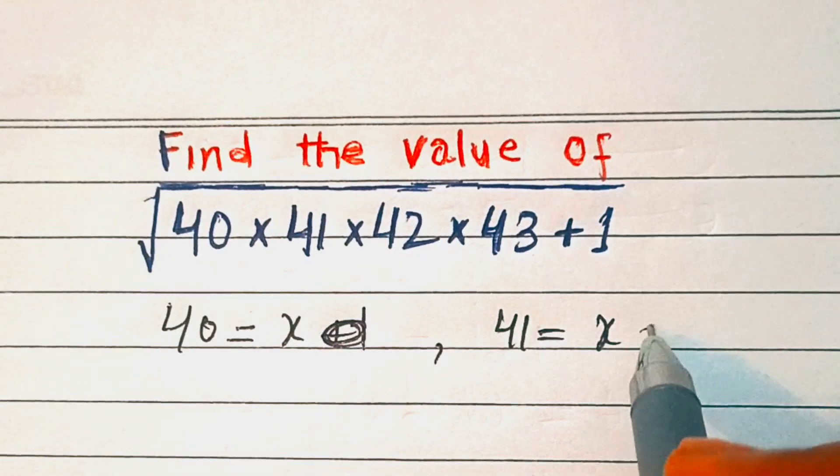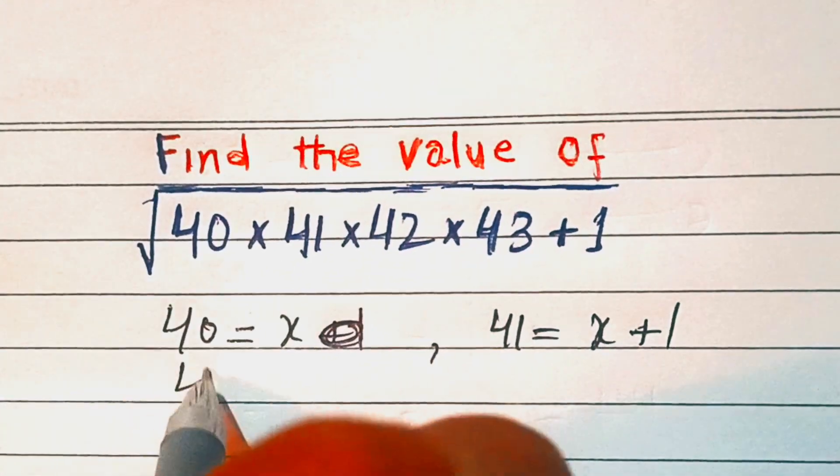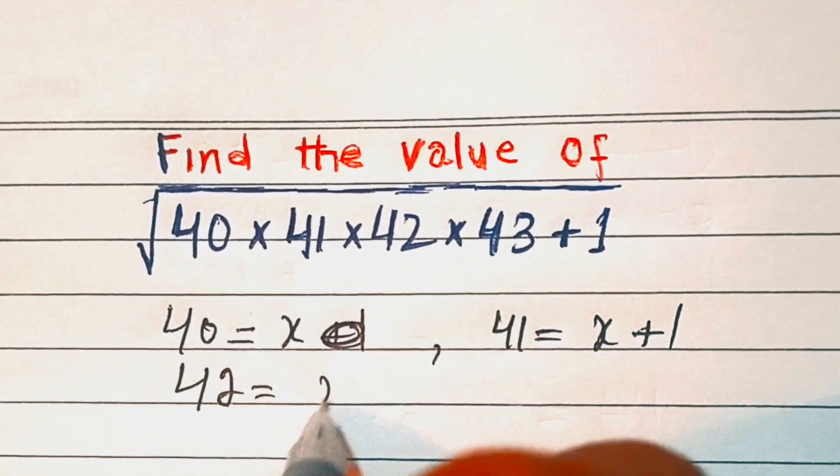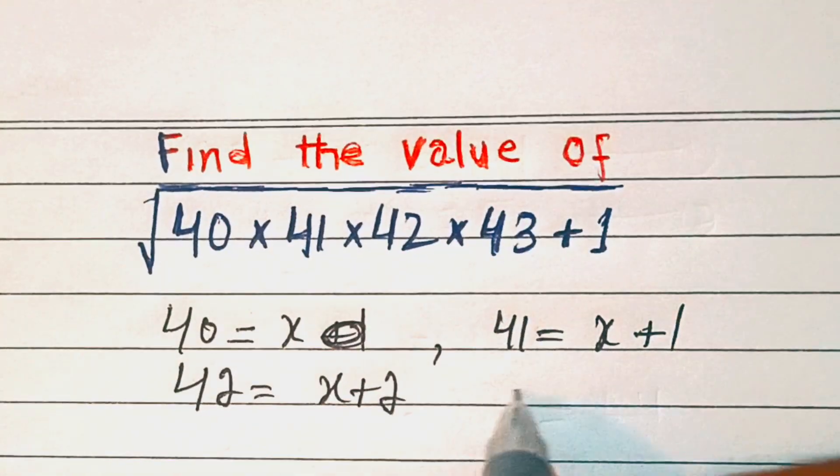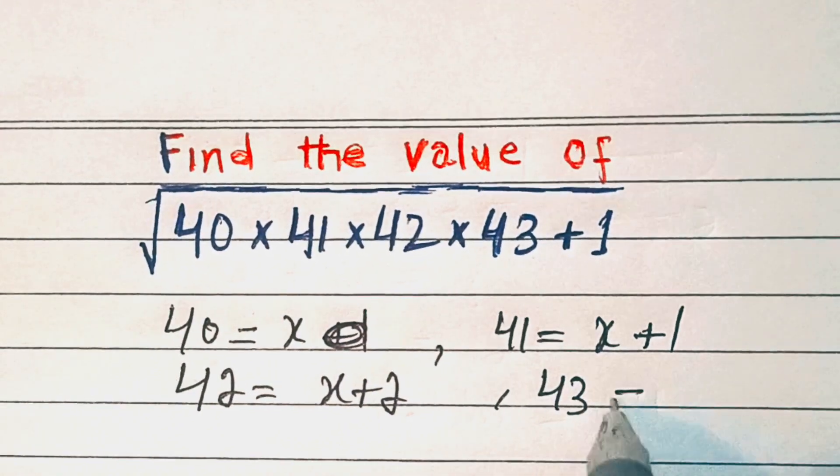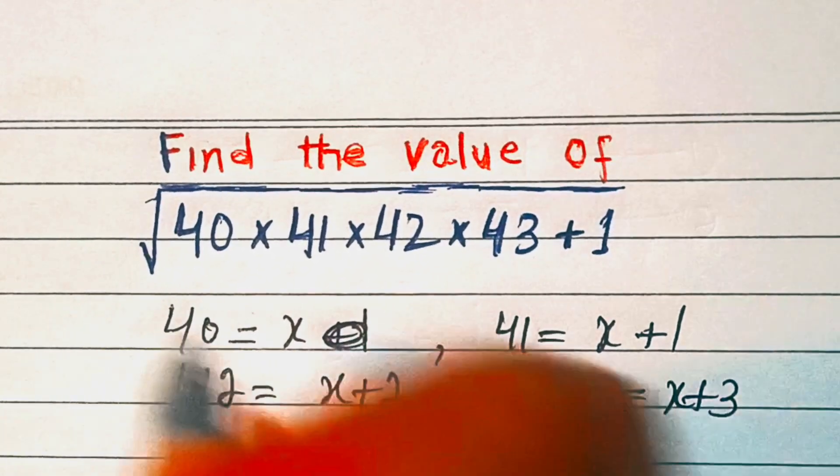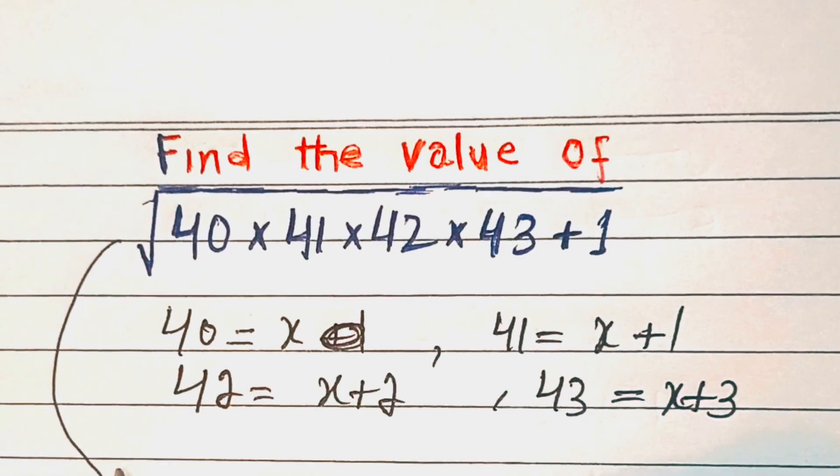So let's make 40 equal to x, 41 equal to x plus 1, 42 equal to x plus 2, and 43 equal to x plus 3. This will become: